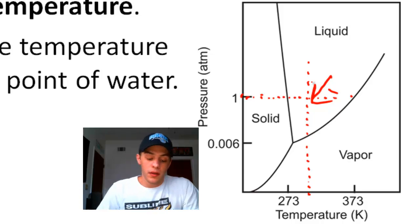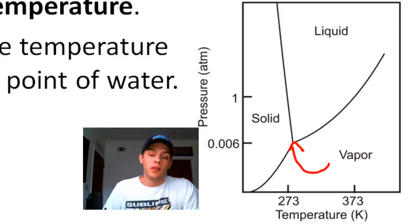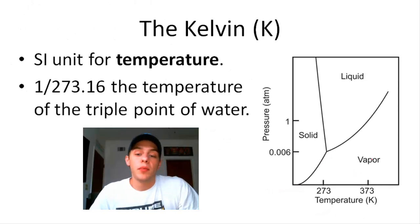So the interesting thing about water's phase diagram is that there is a point on the phase diagram, a certain temperature and pressure, at which water can theoretically exist as a solid, a liquid, or in the vapor state. So this is what we call the triple point of water and it is that point on which the Kelvin is defined.